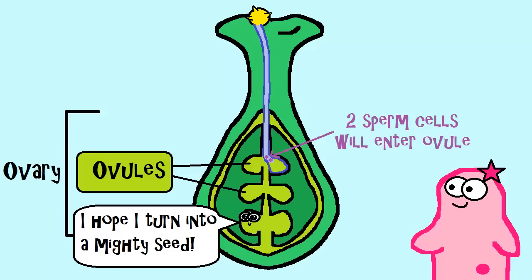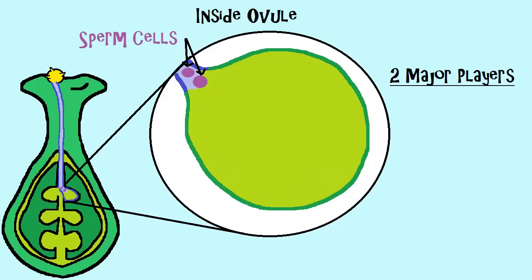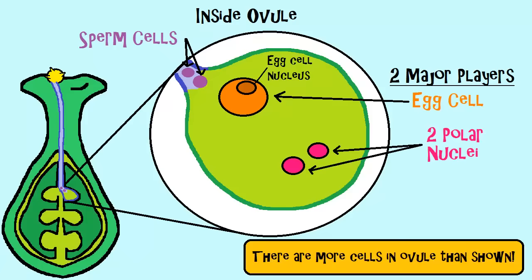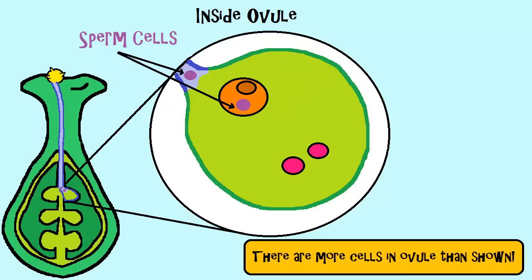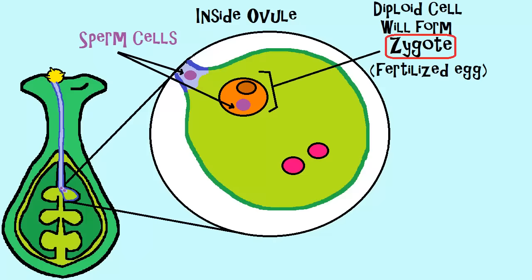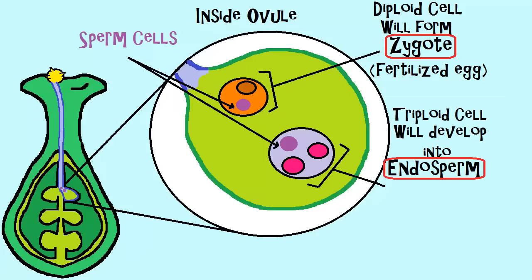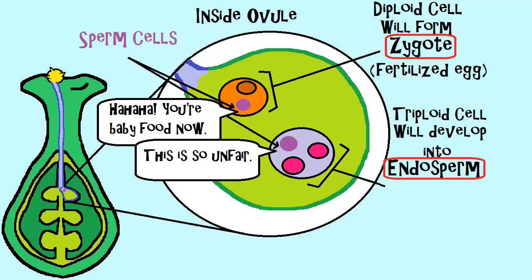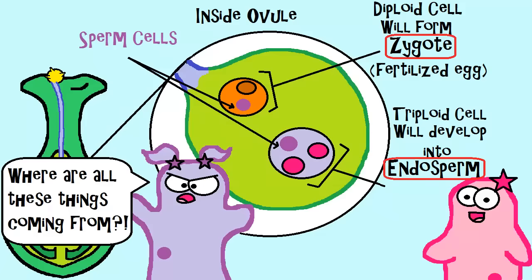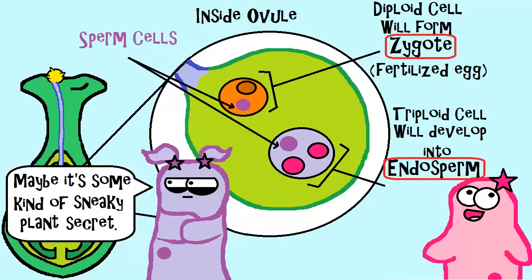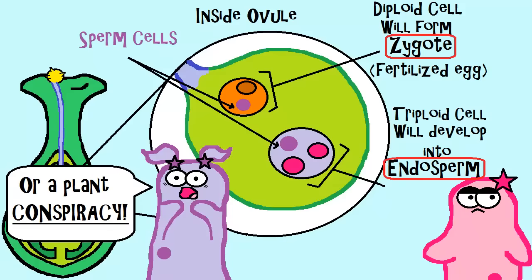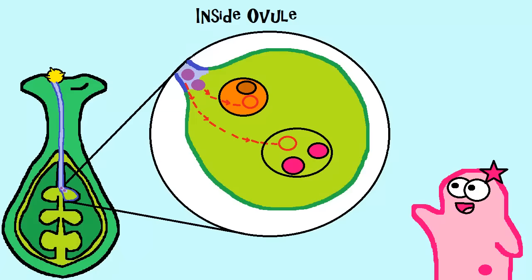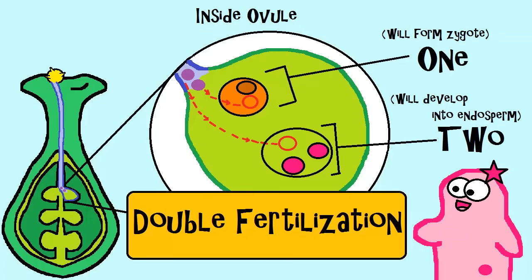There can be multiple ovules inside a plant ovary, but each ovule has the potential to develop into a seed if fertilized. The ovules have two major key players—an egg cell and two polar nuclei. One of the sperm cells fertilizes the egg, forming a zygote, which is basically a fertilized egg. The second sperm cell joins with the two polar nuclei, and this will develop into the endosperm. The endosperm is full of nutrients for a developing baby plant. Because the fertilization process involves sperm cells joining two different things—the egg and the polar nuclei—we call this double fertilization.